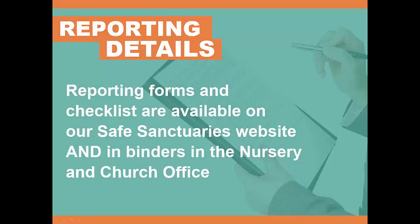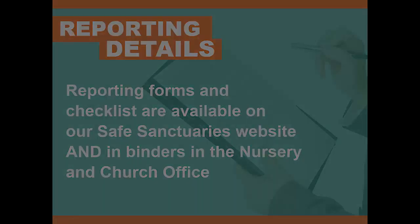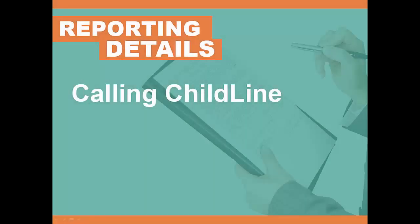If you suspect child abuse and need to make a report, reporting forms for both the state and the church are available through the CUMC website and binders located in the church nursery and church office. Step-by-step instructions are included. The first step is to call Childline, which can be reached by telephone or their online website. The phone number is listed on our Church Safe Sanctuaries website, as well as the binders in the nursery and church office. The online reporting link is also on our website.